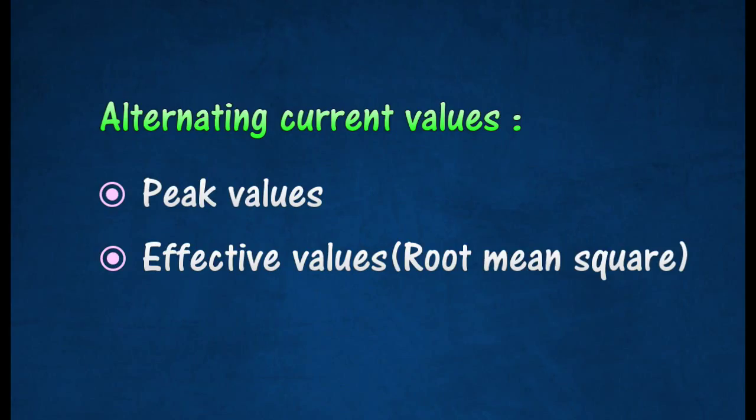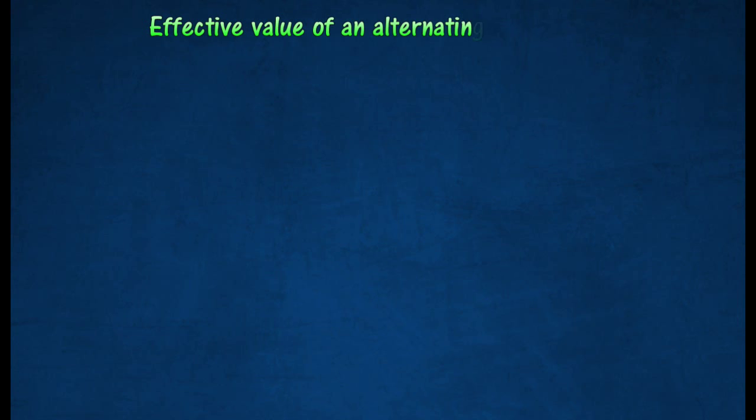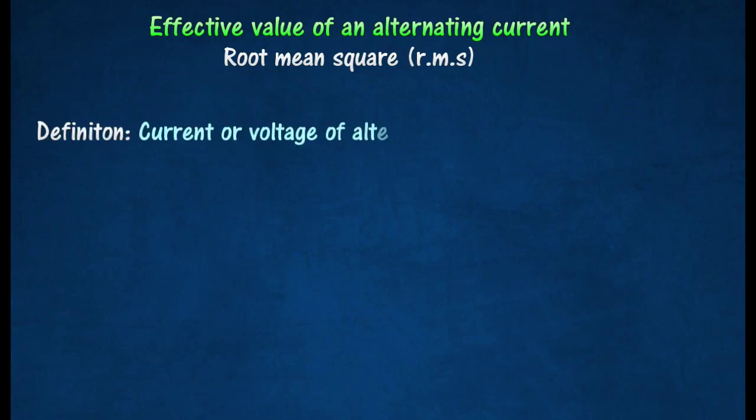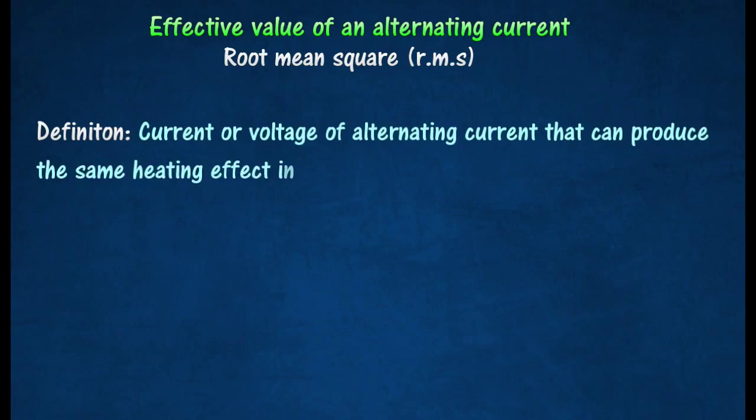The effective value of an alternating current is called the root mean square value. The root mean square value is the current or voltage of alternating current that can produce the same heating effect in a conductor as that of a direct current of the same value.